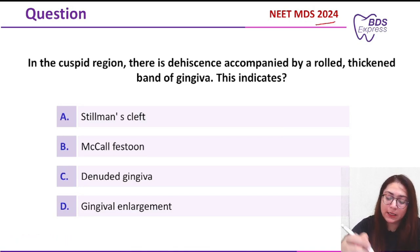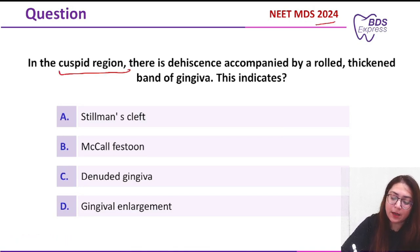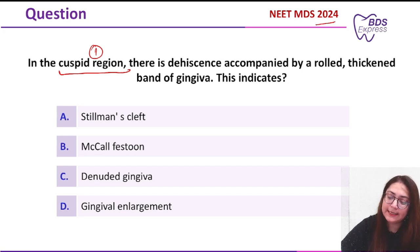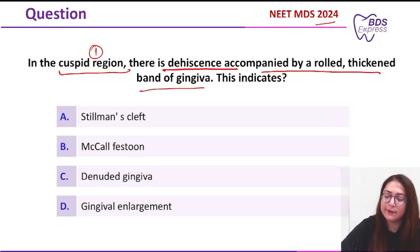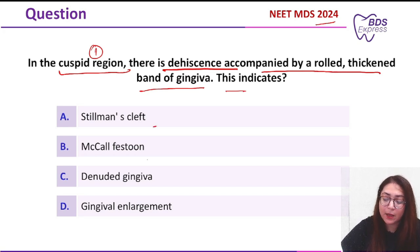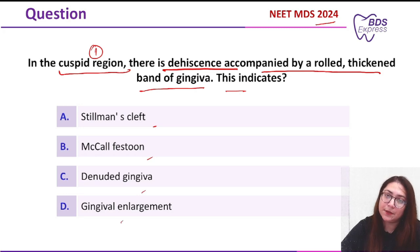The question was: in the cuspid region — they are themselves telling that in the cuspid region — there is dehiscence accompanied by a rolled thickened band of gingiva. This indicates... Options given were Stillman's cleft, McCall's festoon, denuded gingiva, and gingival enlargement.